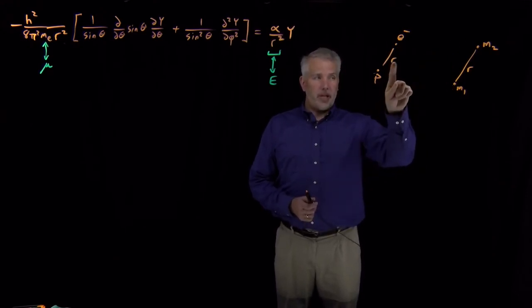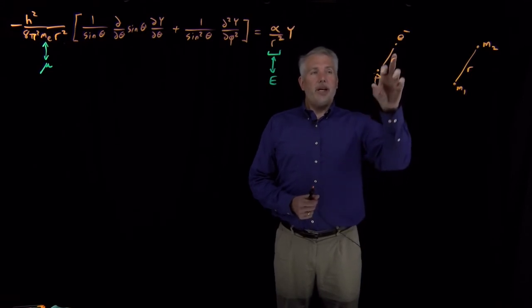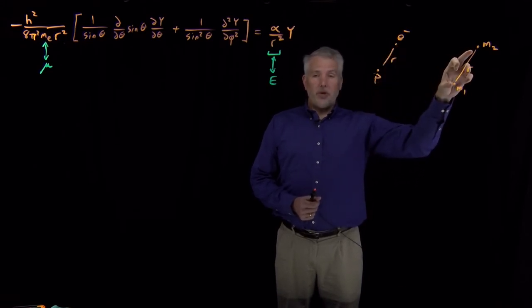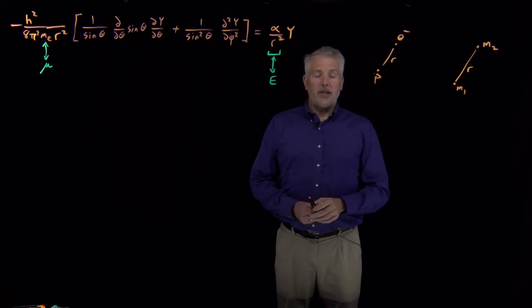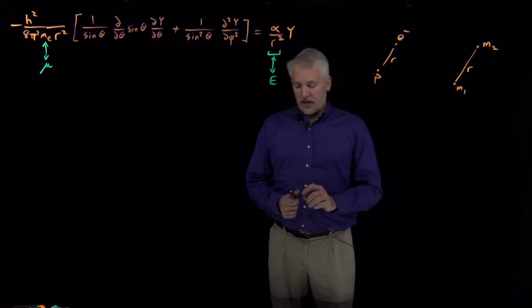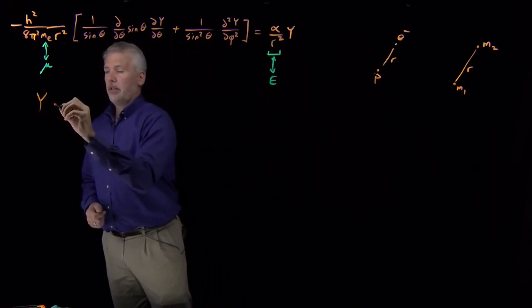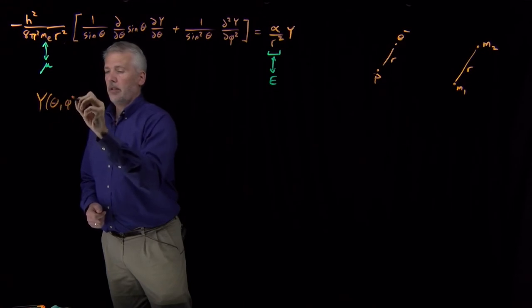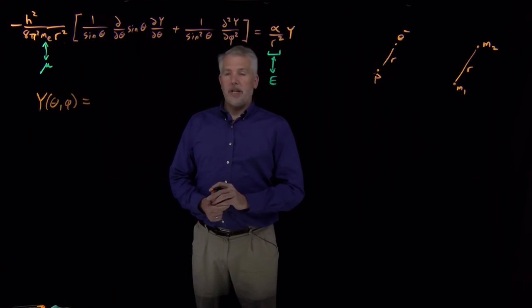If we keep their distance fixed and leave the radial portion of the behavior for a different day, then at fixed r, a rigid rotor molecule behaves exactly the same as the angular behavior of an electron and a hydrogen atom. And so we've already solved this problem, as it turns out.